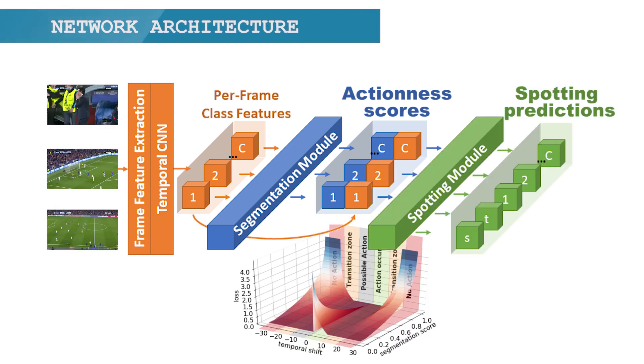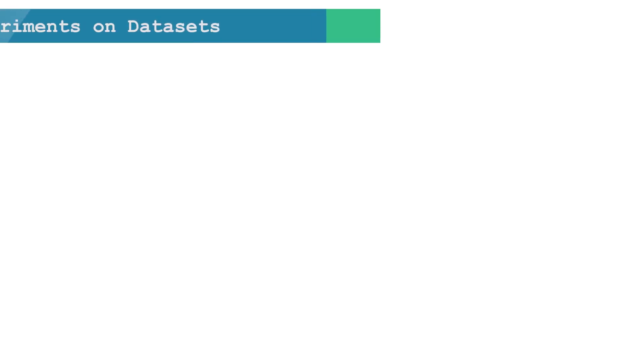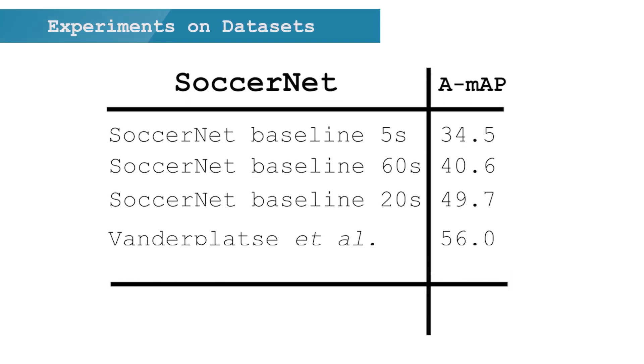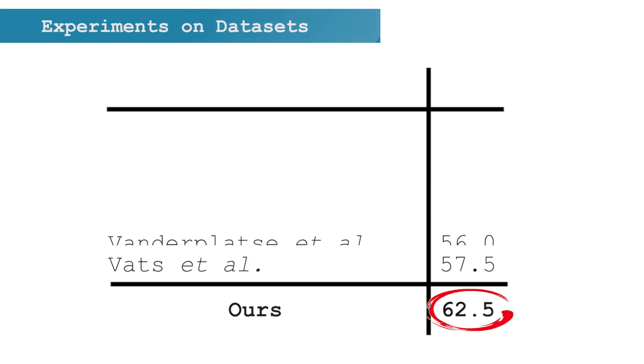Here is our final network structure. The spotting module uses the previous context features and outputs the detected action spots. Now that you know everything about our network, loss function, and training, let's look at the main results. On the SoccerNet dataset, we beat every other method by far — which is awesome! But this is just a global metric, so let's analyze the output of our network in detail to see the strengths and weaknesses of our model.